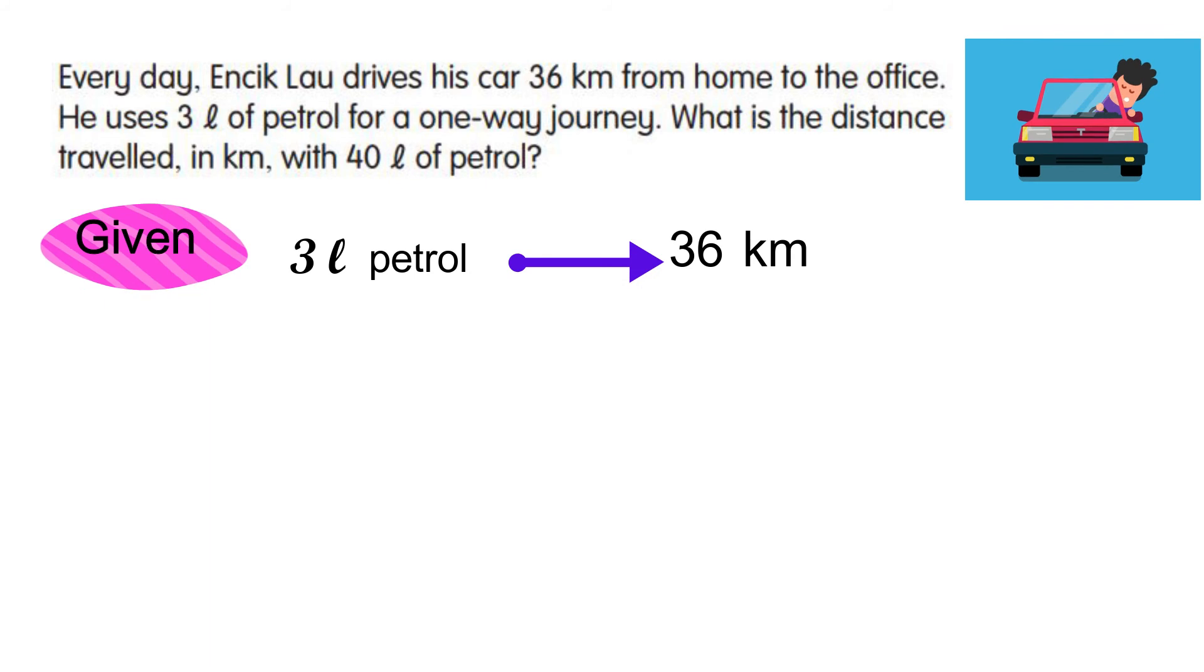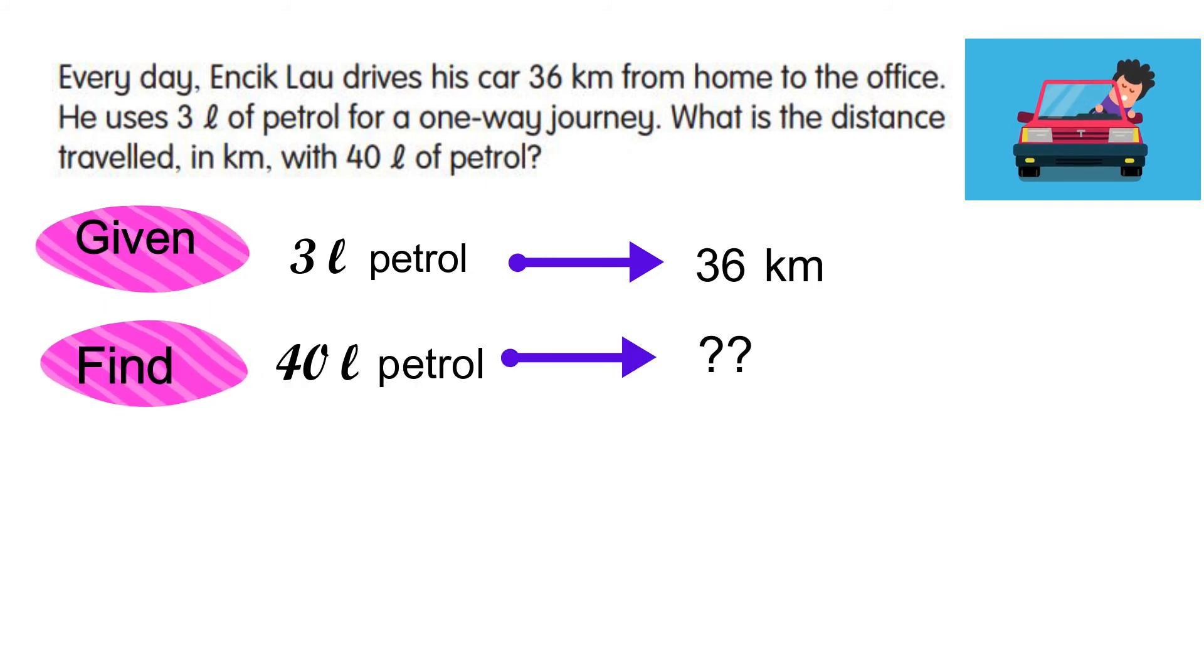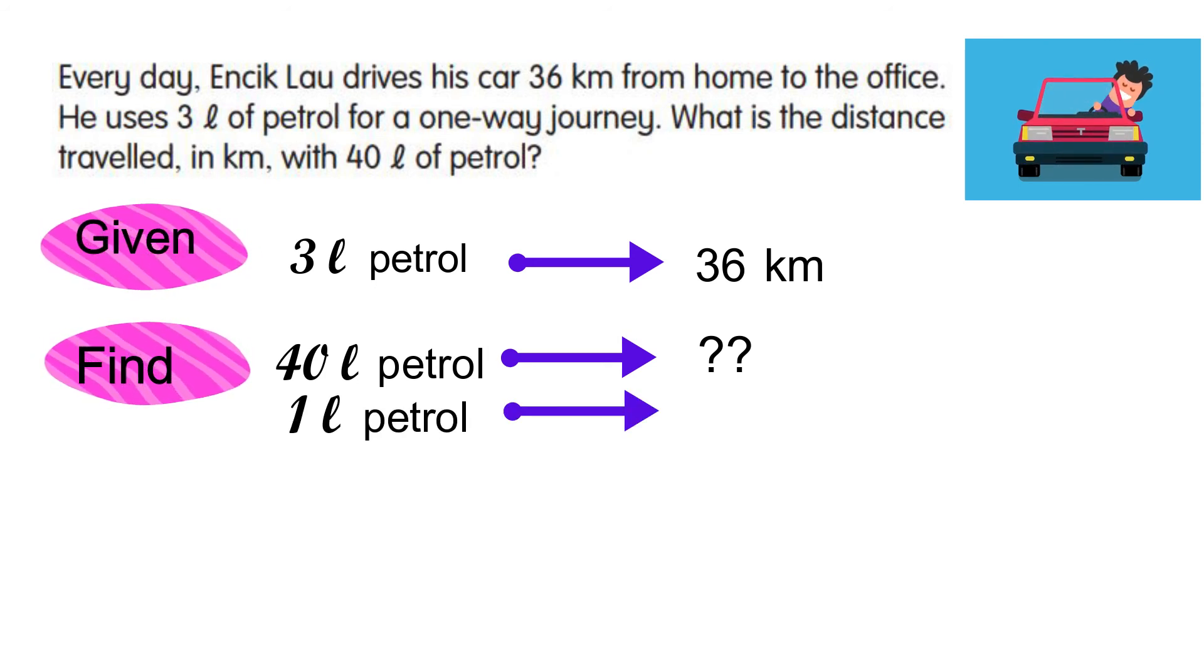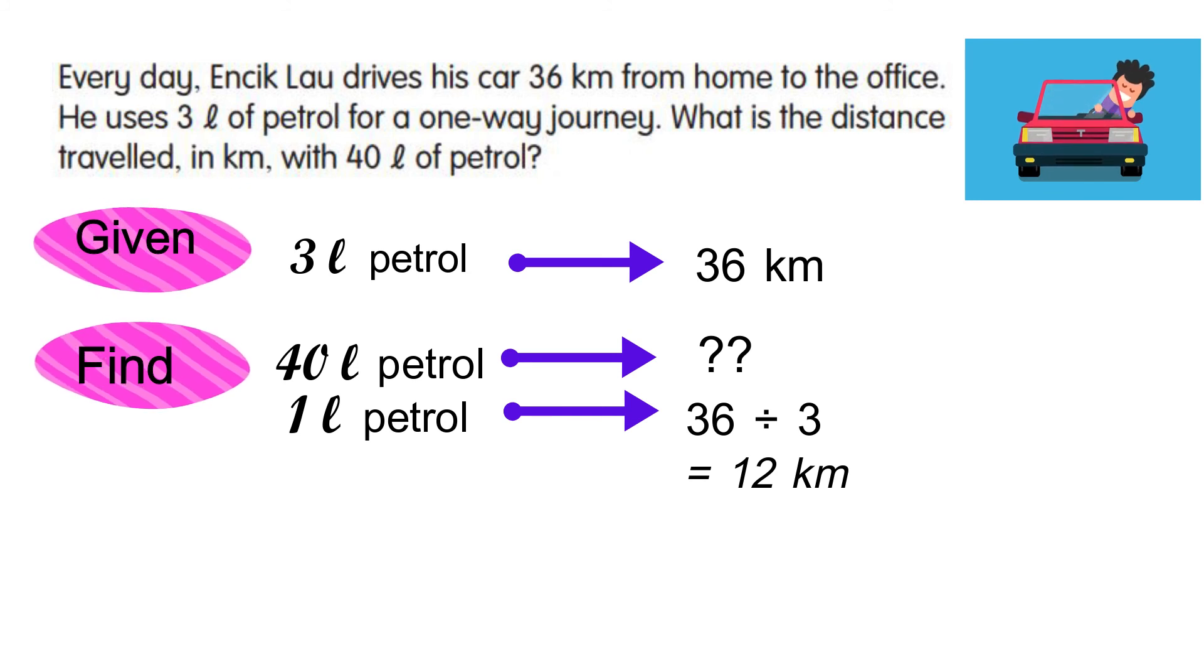First, find the distance traveled with one liter of petrol. To find the distance for one liter of petrol, we need to divide. 36 kilometers divided by three, we will get 12 kilometers. Now with one liter of petrol, Mr. Lau can travel 12 kilometers.